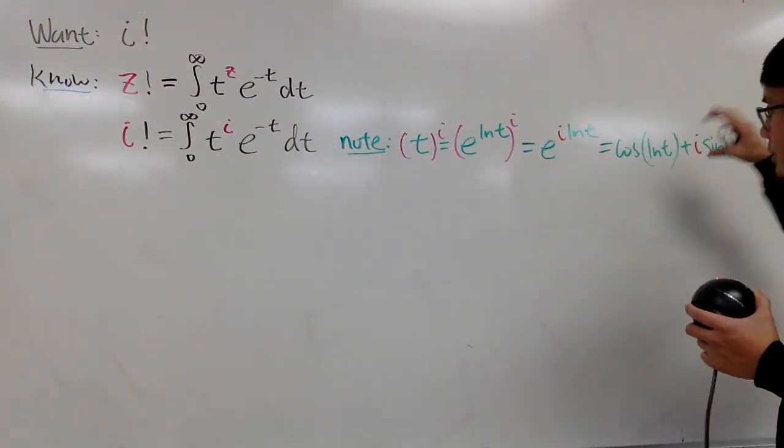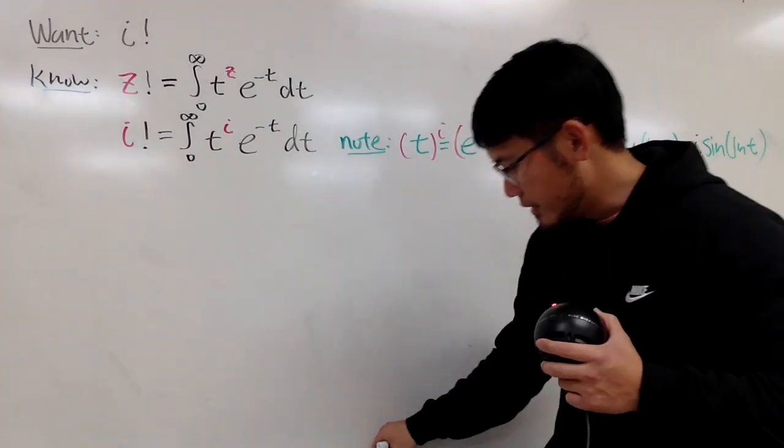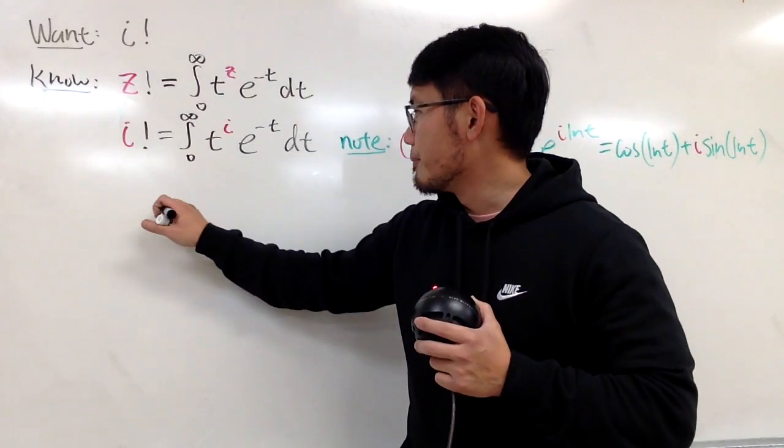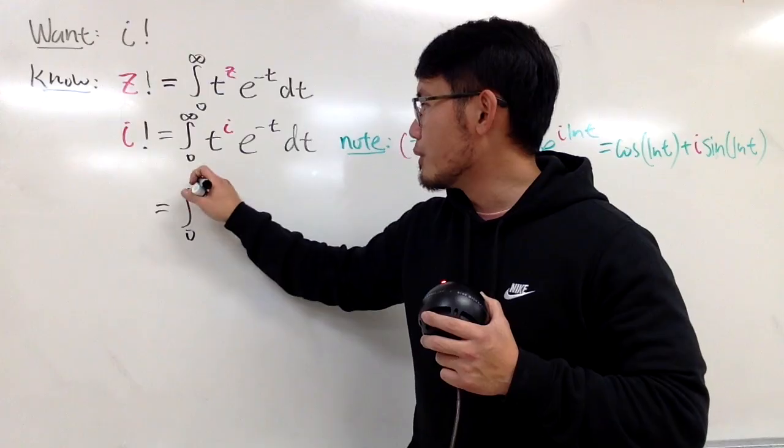So, we just have to multiply this and that and all that stuff. So, let's see. Right here, let me write it down. We have the integral from 0 to infinity.